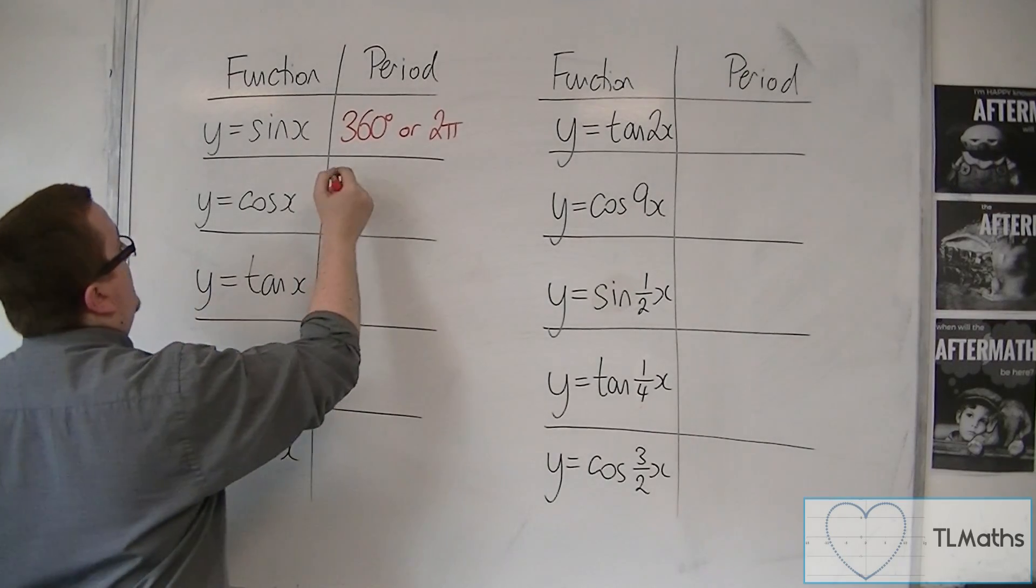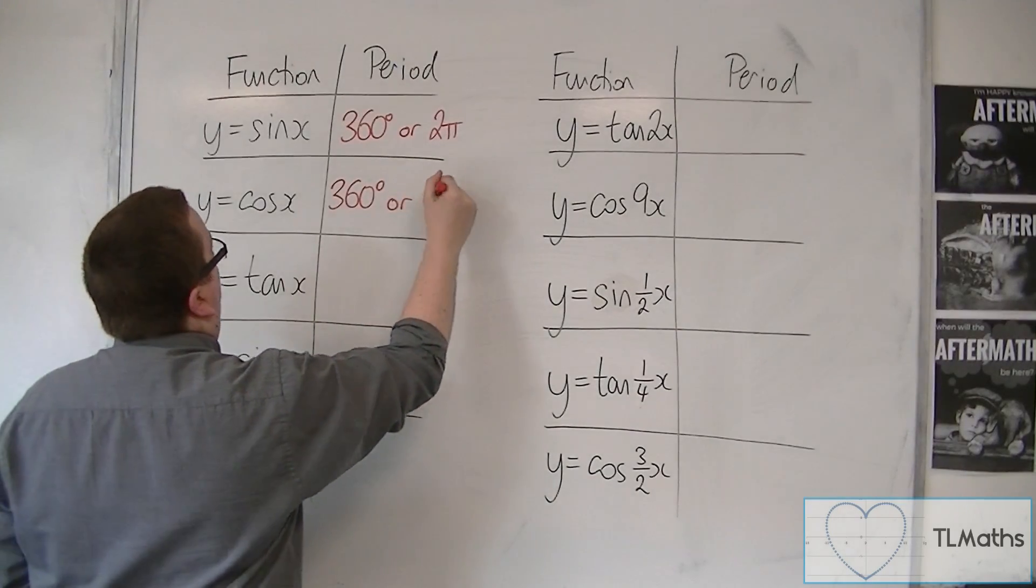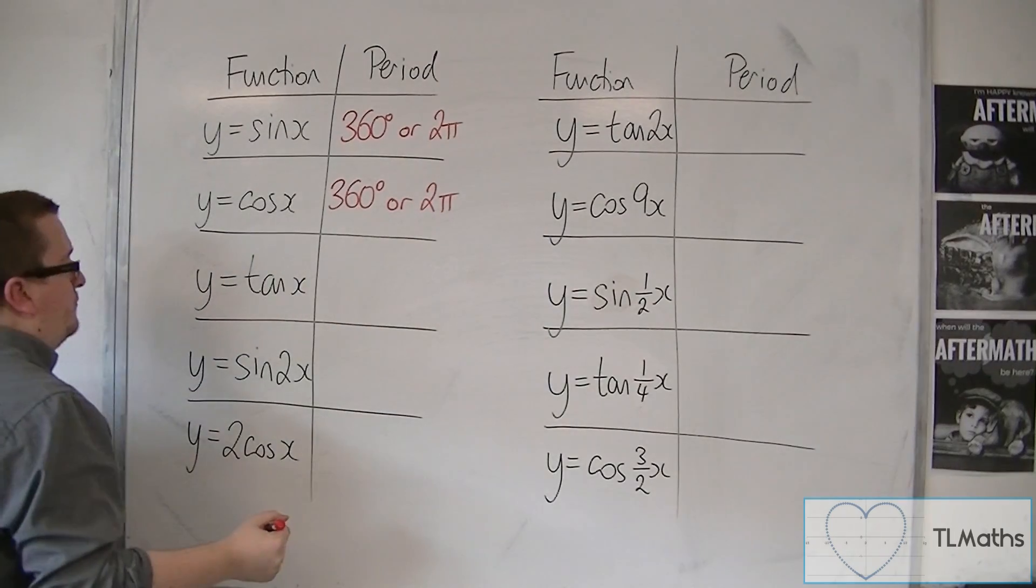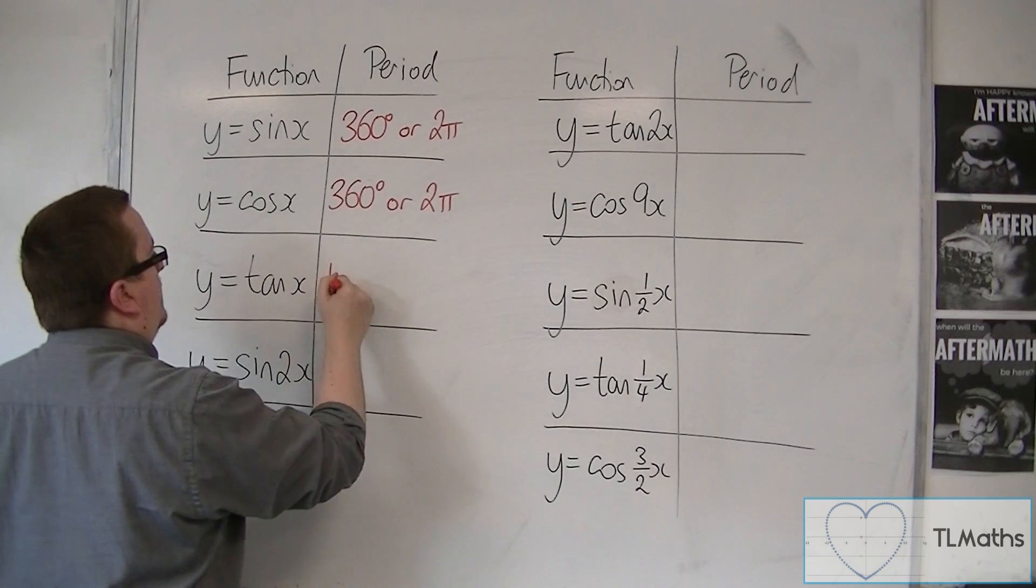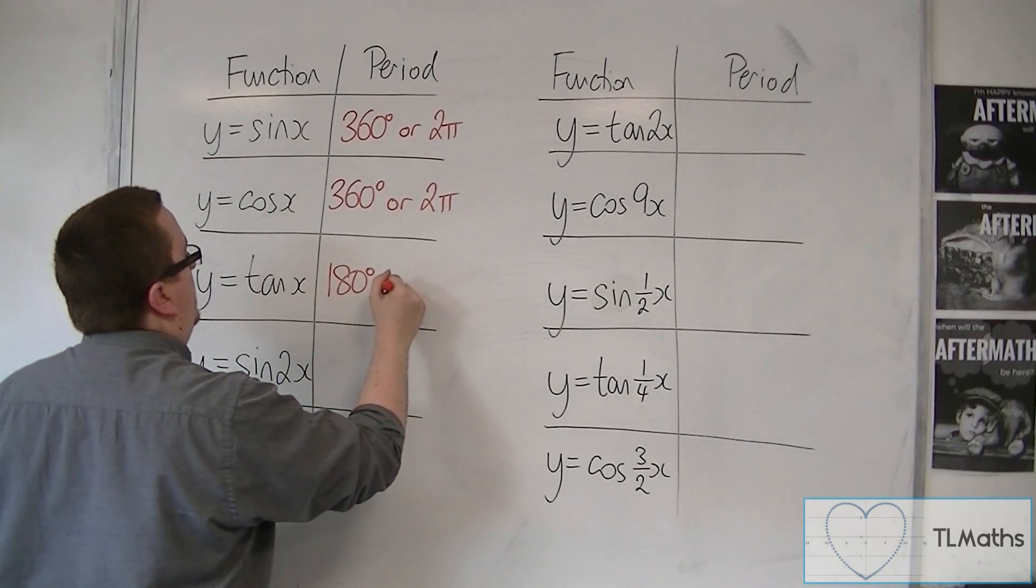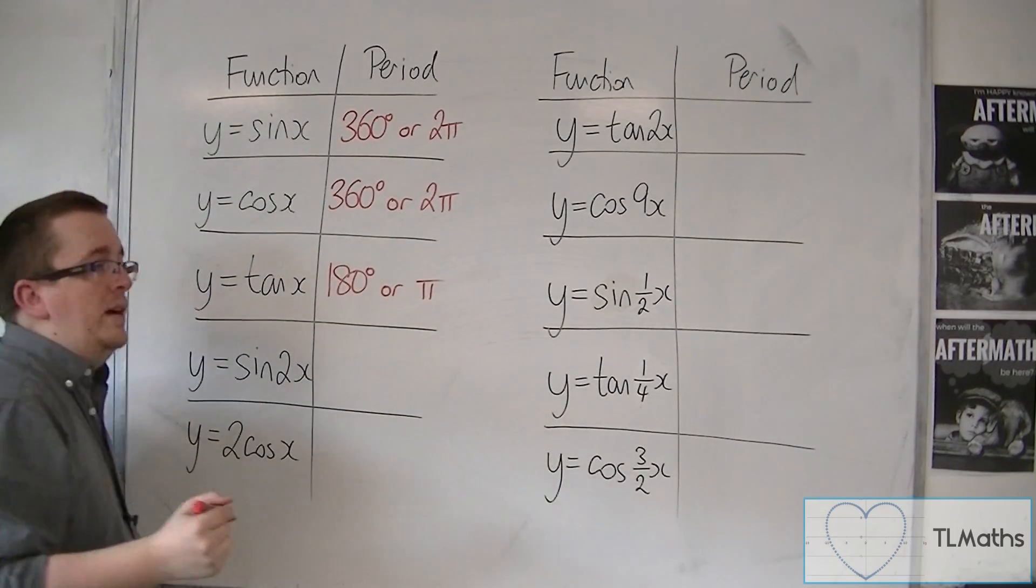Cosine is exactly the same: 360 or 2 pi. For tan, that's half of that. It's 180 degrees or just pi radians.